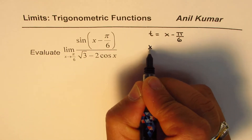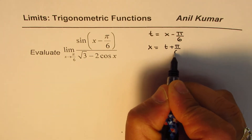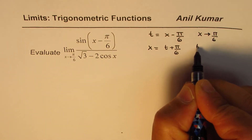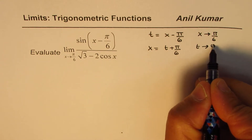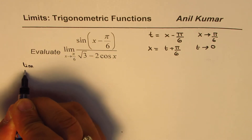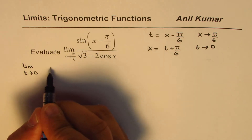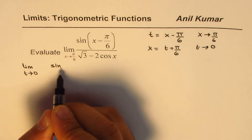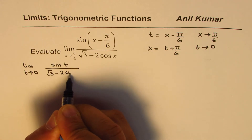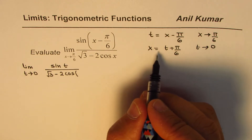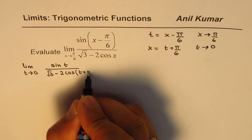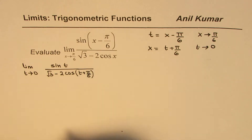Then x = t + π/6, and when x approaches π/6, t approaches π/6 − π/6 = 0. With that substitution, we rewrite the given limit as: limit t→0 of sin(t) in the numerator, and in the denominator √3 − 2 cos(t + π/6).